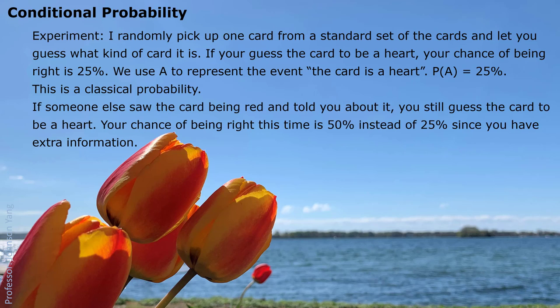If someone else came over and saw the card I chose — it was a red card — and told you about it, you have extra information. So if you are guessing, you definitely are not going to guess black. Your chance of being right by guessing heart this time is 50% instead of 25%, since you have extra information. This kind of probability is called conditional probability — you consider extra information, and that is your condition.